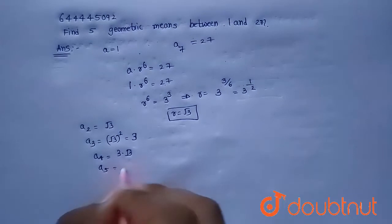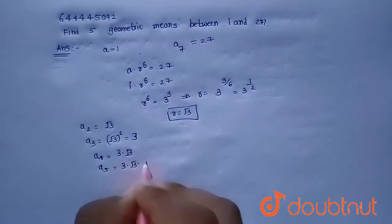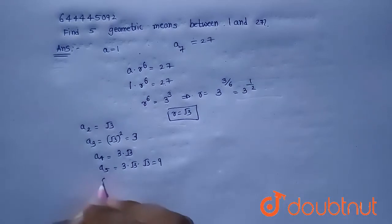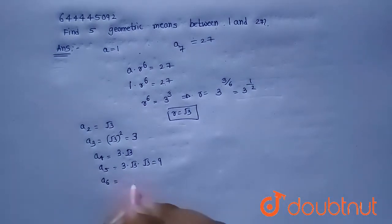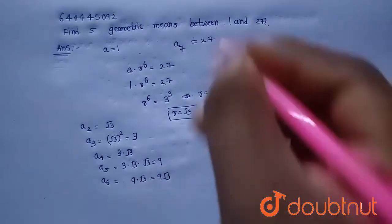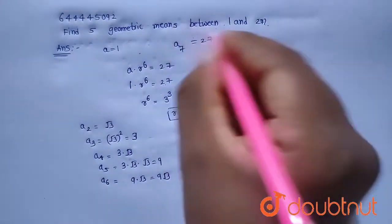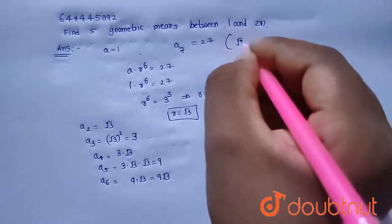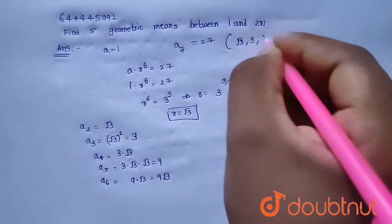a₅ will be 3√3 × √3 = 9. And finally, a₆ = 9 × √3 = 9√3. So finally, the five geometric means between 1 and 27 are: √3, 3, 3√3, 9, and 9√3.